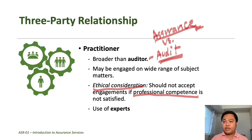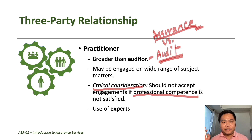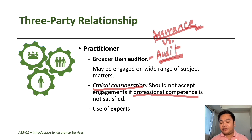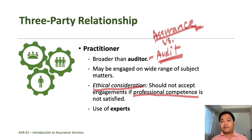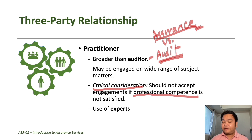For example, if you are asked to accept an engagement where part of it requires another discipline — such as an engineering aspect — you can still accept the engagement, but for that aspect which is beyond your expertise, you will have to use an expert like an engineer. Experts are professionals whose field of discipline or specialty is other than accounting or auditing.